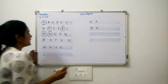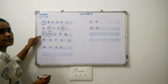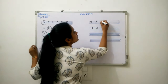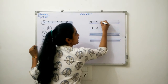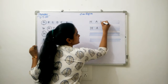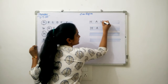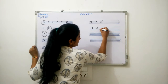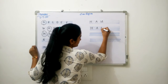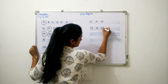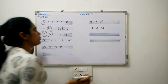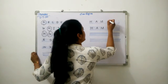Next letter is M: standing line, slanting line, slanting line, standing line. Once again: standing line, slanting line, slanting line, standing line. M.